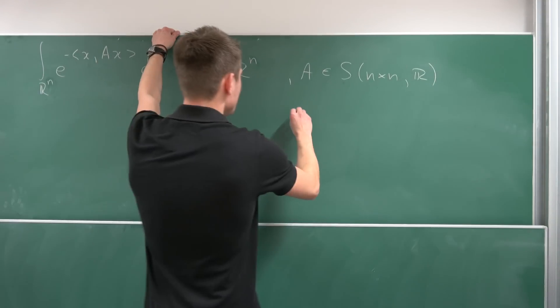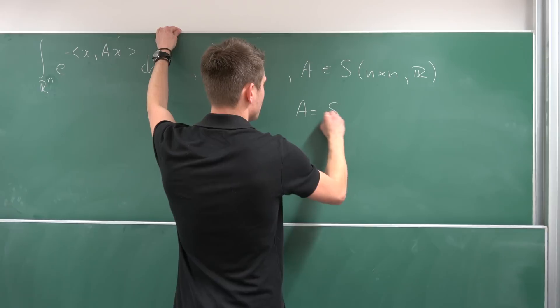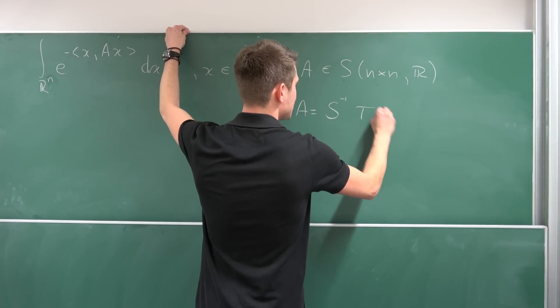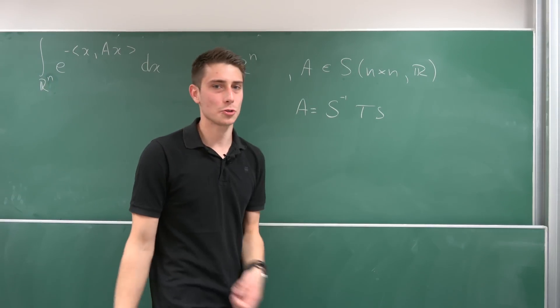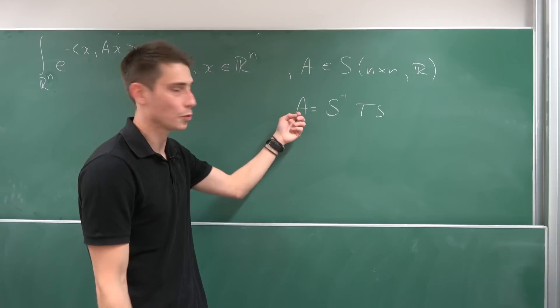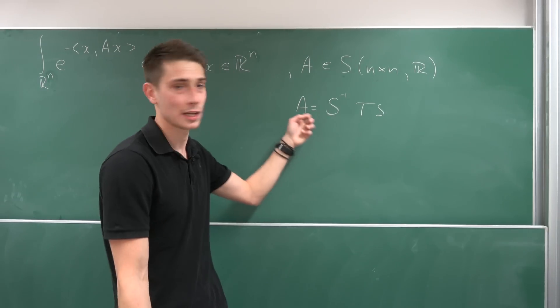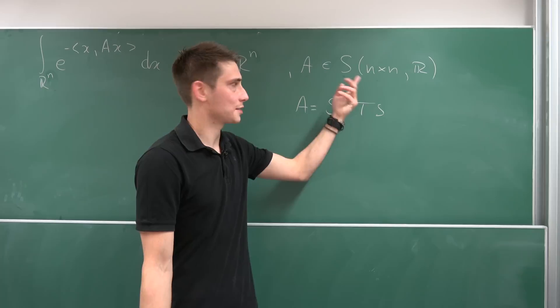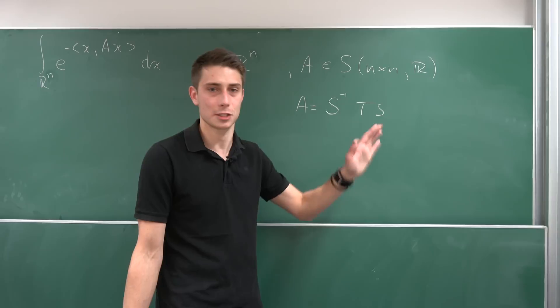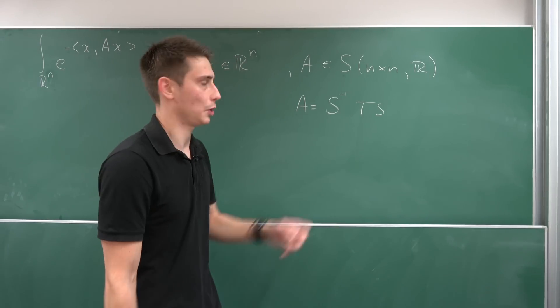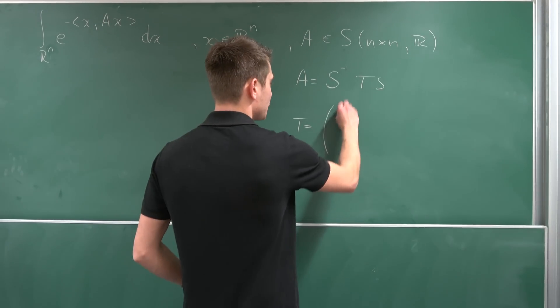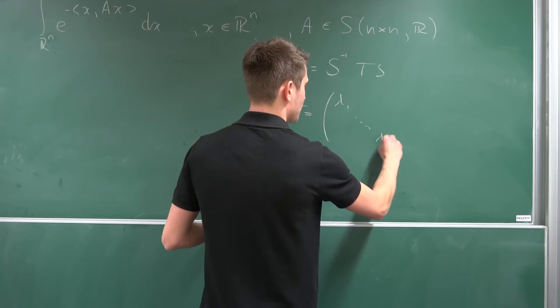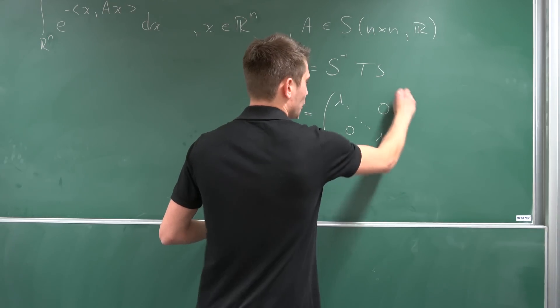Meaning we can take our A right here and express it as some s to the negative one t times s. But our s is going to be orthogonal. And this is going to work with all positive definite symmetric matrices. It's just a theorem. It's kind of hard to prove, but it's something that works out. T right here is nothing but our diagonal matrix with all the eigenvalues lambda 1 to lambda n right here with 0 in all the other places.